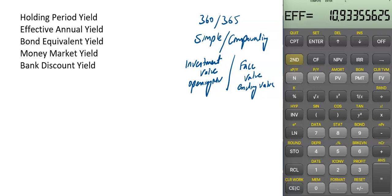So let's learn them one by one. Number one is holding period yield. Holding period yield tells you how much you earn in any given period. Its formula is: closing market value minus opening market value, plus any dividend received, divided by the opening market value. That is the holding period yield.